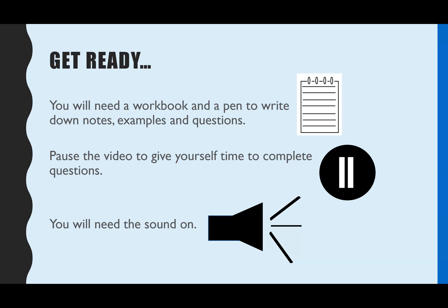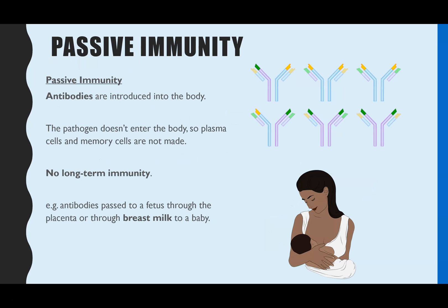If you want to make notes as you go through, grab a pen and paper now and pause as and when. So first of all, passive immunity - this is when you don't actually create the antibodies yourself; you would have had the antibodies introduced into you, and that might be through an injection of pure antibodies. This means the antibodies will be very fast working, but you won't have any memory cells because you didn't naturally create those antibodies, so you won't have any long-term immunity.